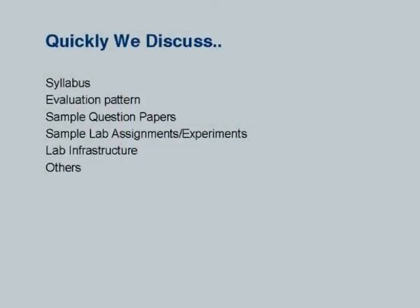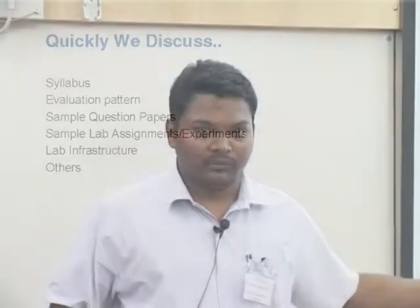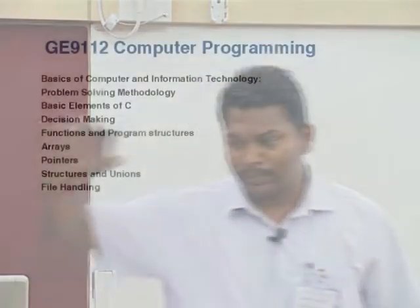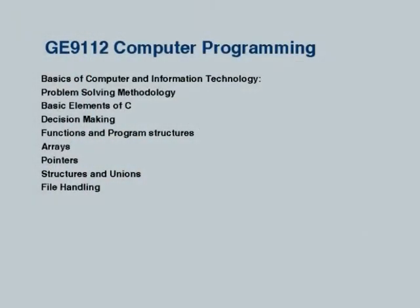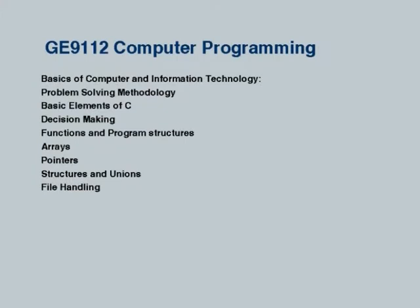Regarding computer programming, in the engineering autonomous section of our university we have 32 UG courses, and all UG courses cover three papers. In theory they have concepts regarding the computer, computer science, IT, problem solving, and C programming — nothing more than that.